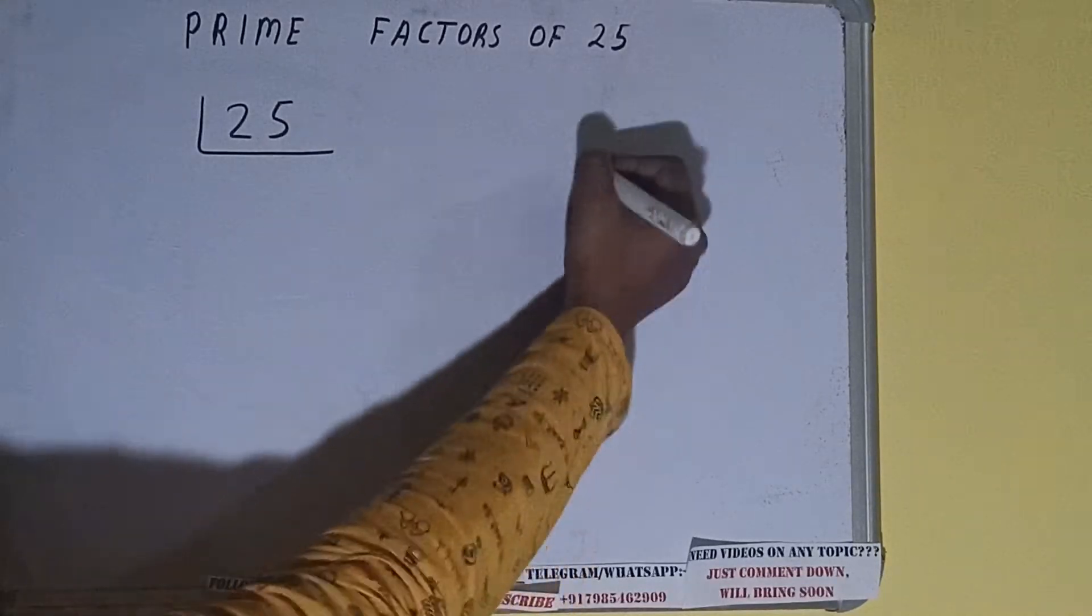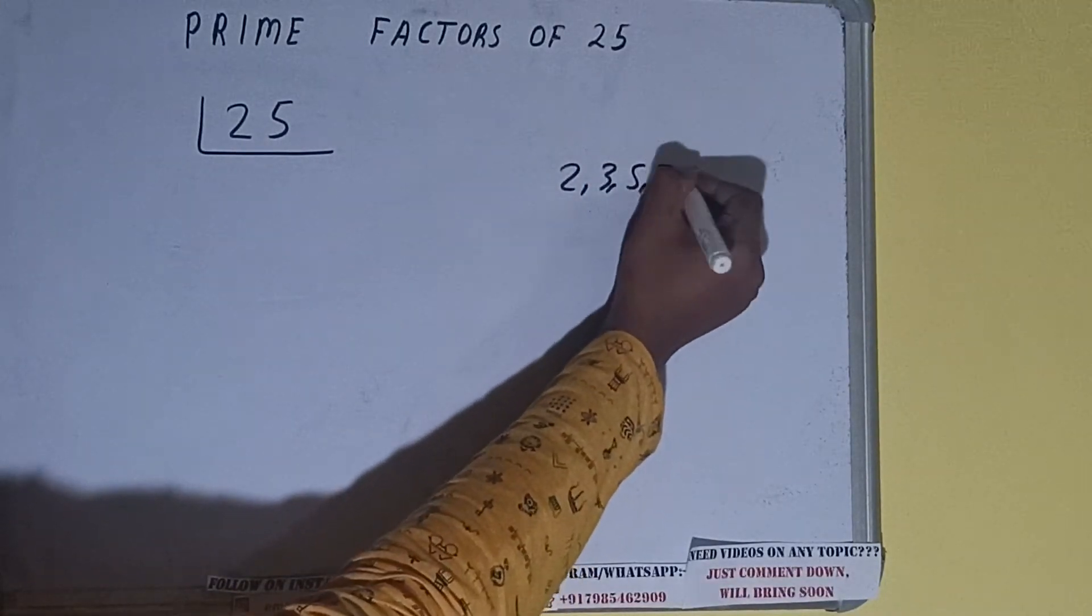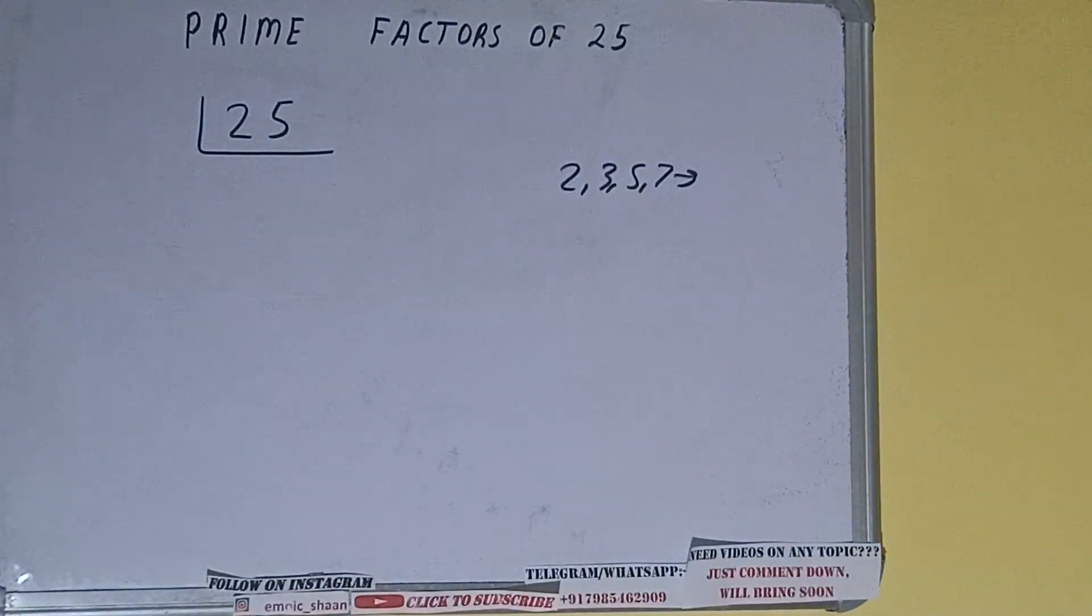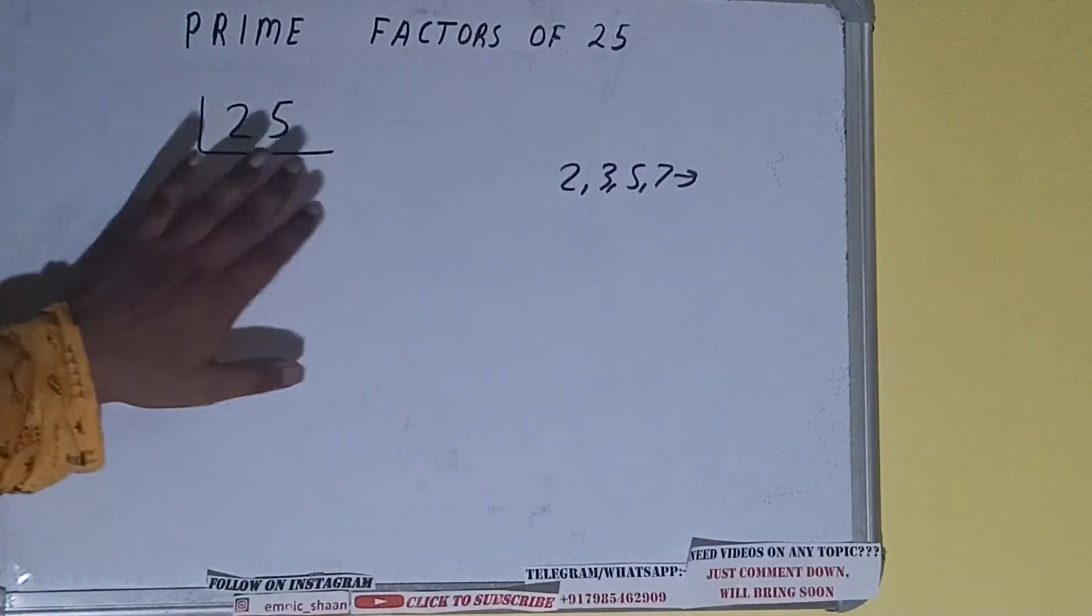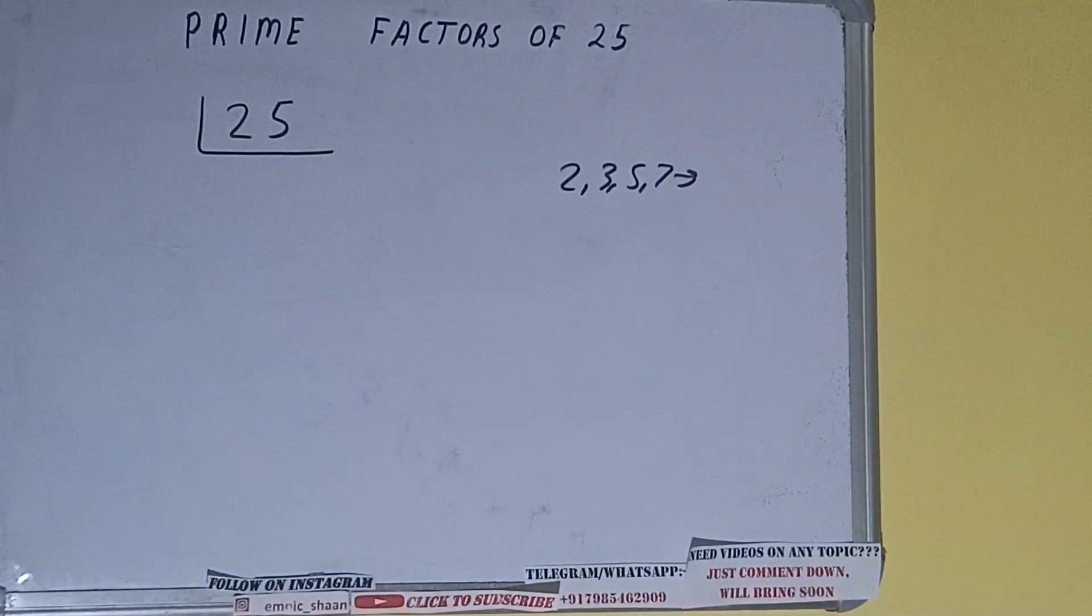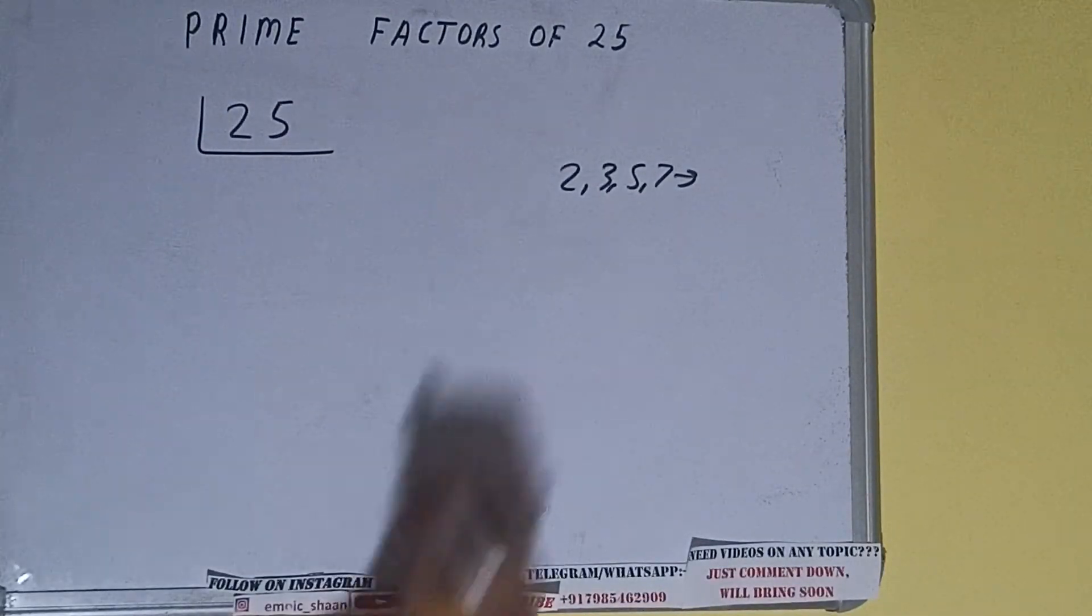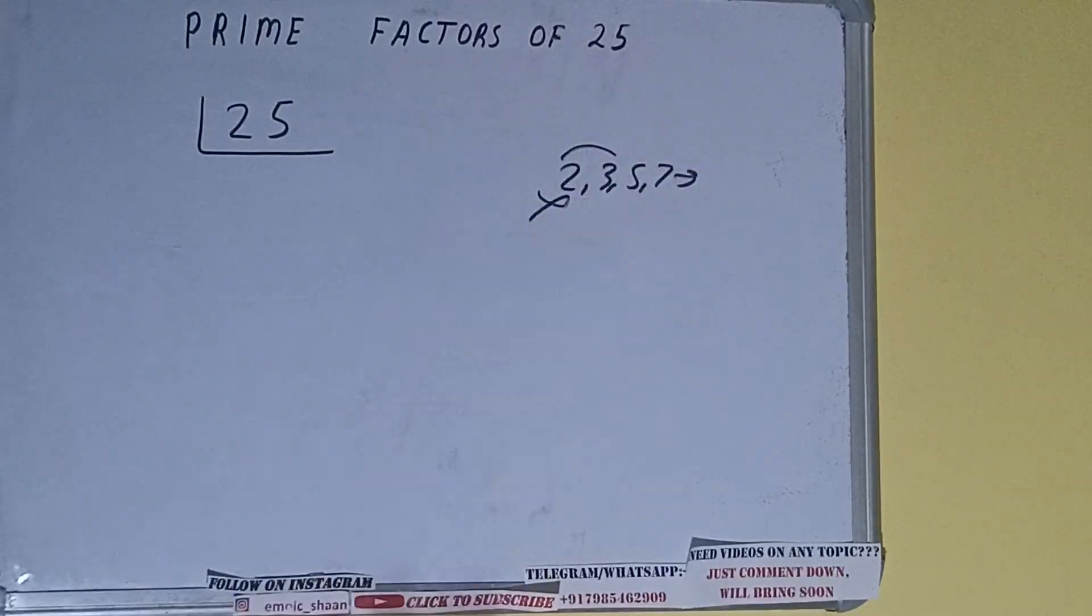All right, so we'll check with the lowest prime number we have, that is two. Is the number 25 divisible by two? No, it is not because the number is odd. So we'll check with the next lowest prime number, that is three. Three goes into 24 with one left, so with three also not divisible.